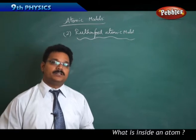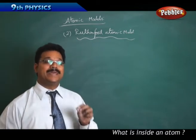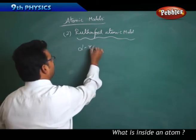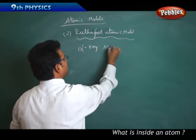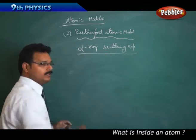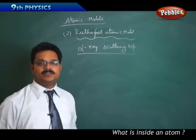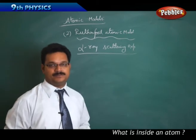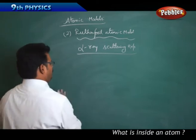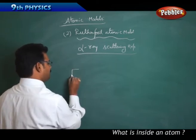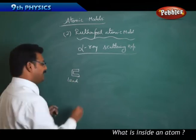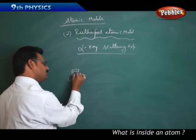Rutherford guided his two research students to do an experiment, and that experiment was called the alpha ray scattering experiment. A breakthrough experiment in physics, a revolutionary experiment. So how this experiment happened: there is a lead block. Inside the lead block there is a radioactive source.